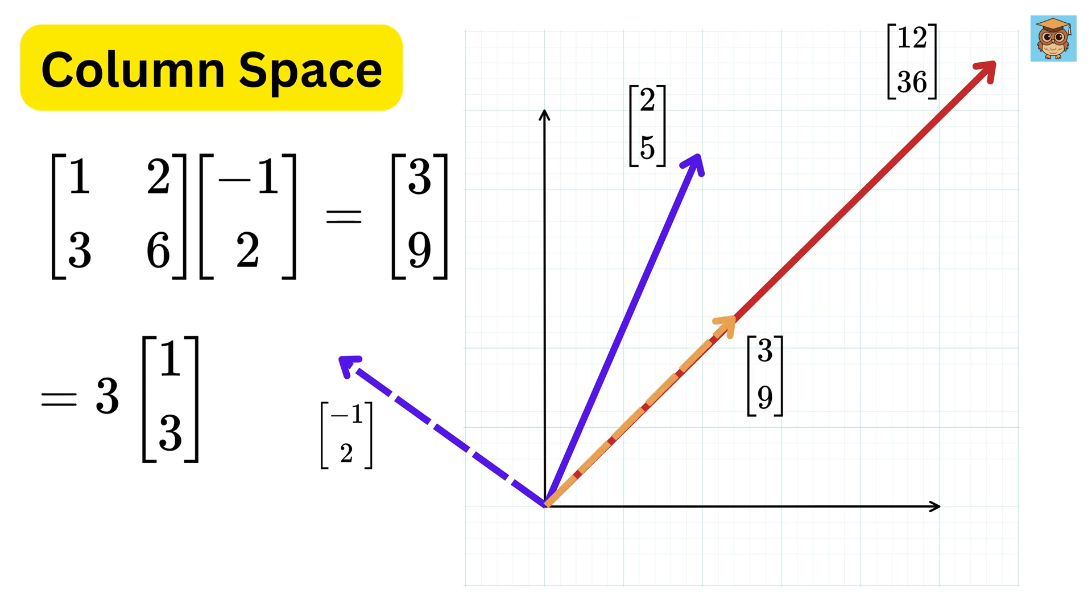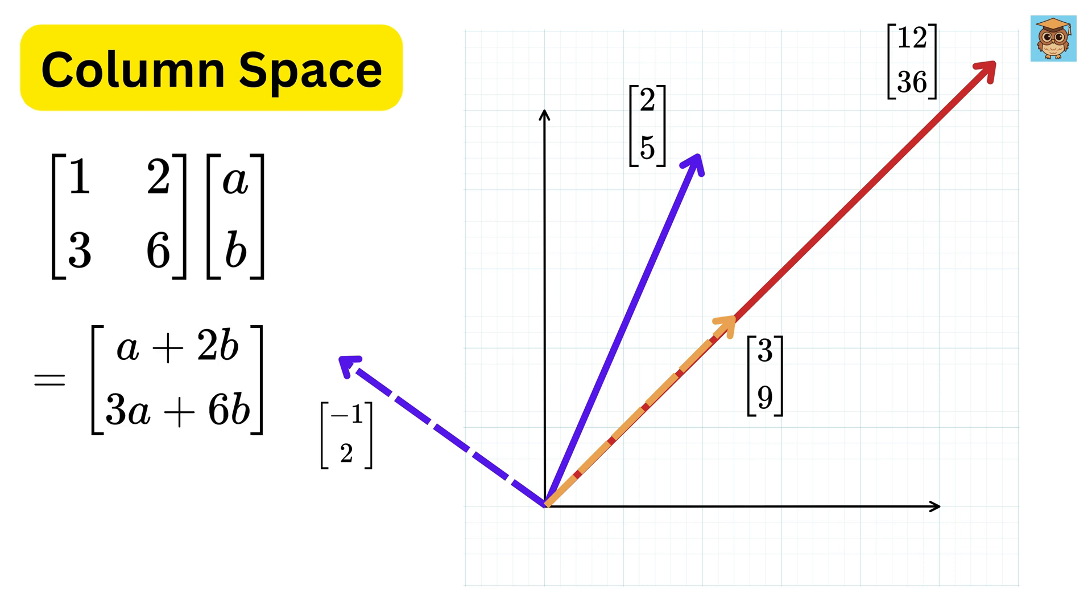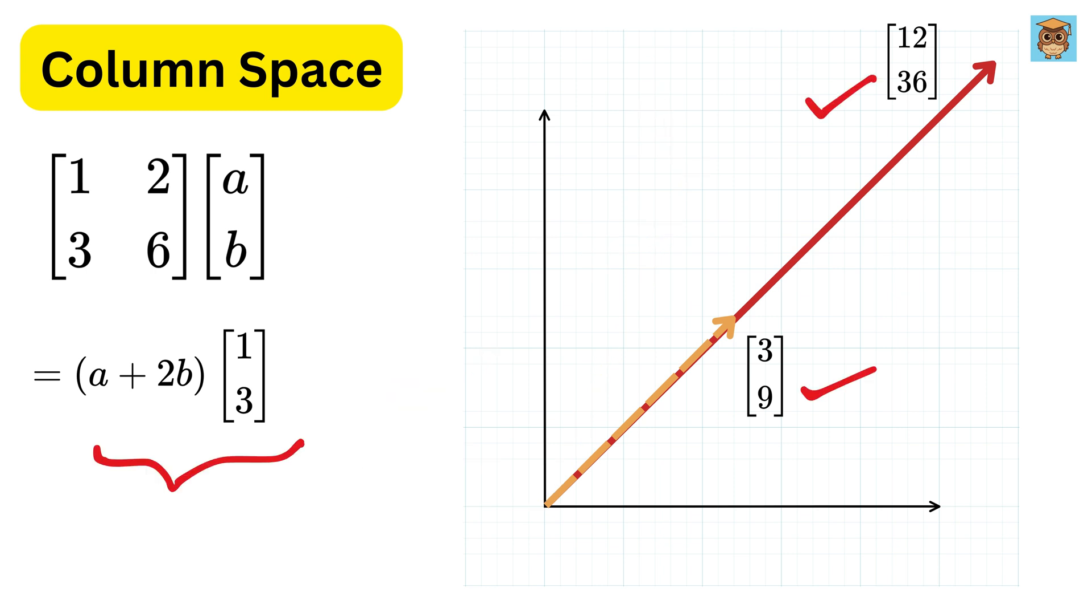This way, if we take any vector A,B on this plane, we will get this on multiplication with this matrix. Now if we take A plus 2 times B as common, we get A plus 2 times B times 1,3. So, what do you observe? No matter what input vector we choose, whether it's 2,5, or minus 1,2, or anything else, like A,B, the output always ends up as some multiple of the vector 1,3. That's interesting.